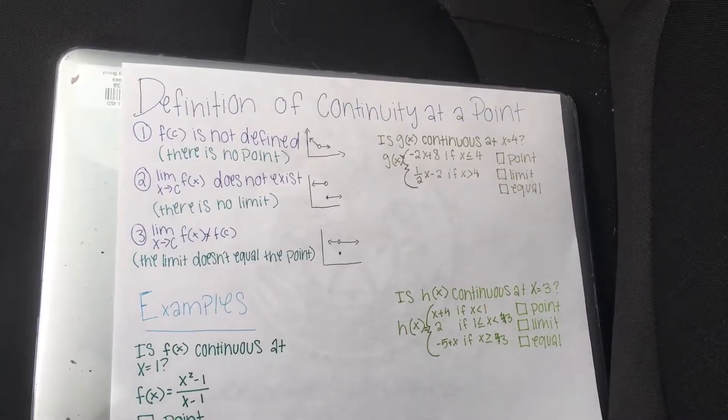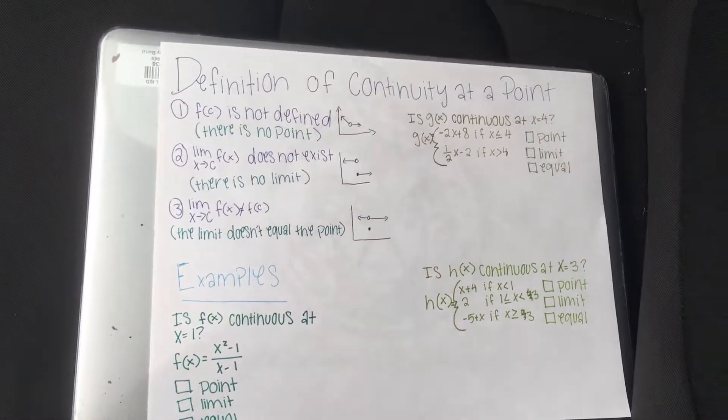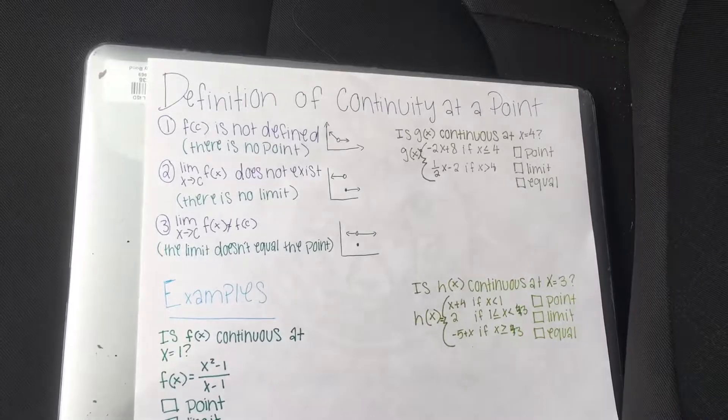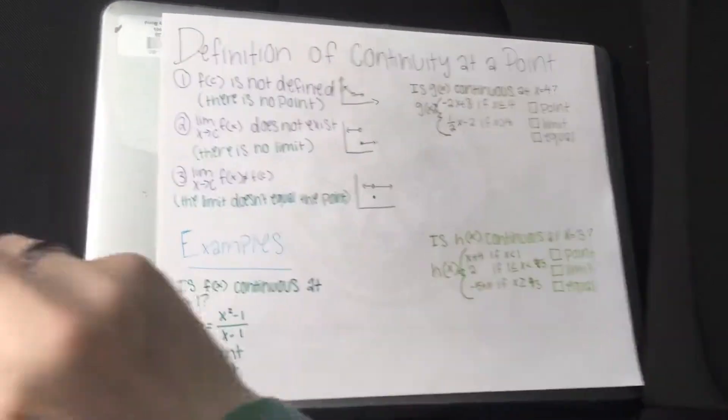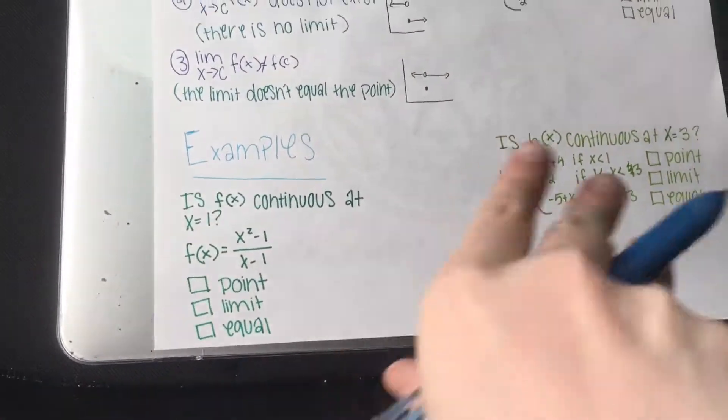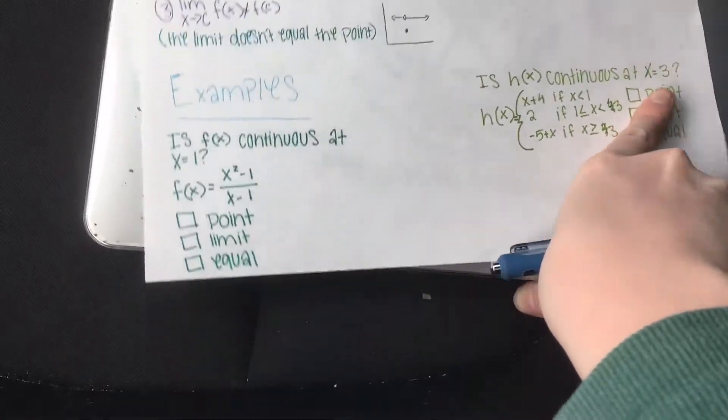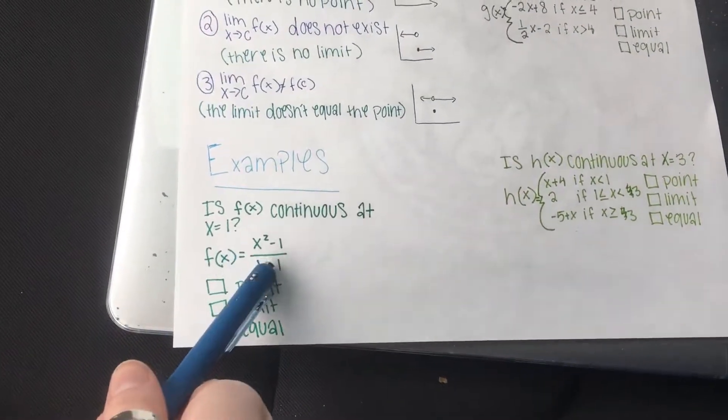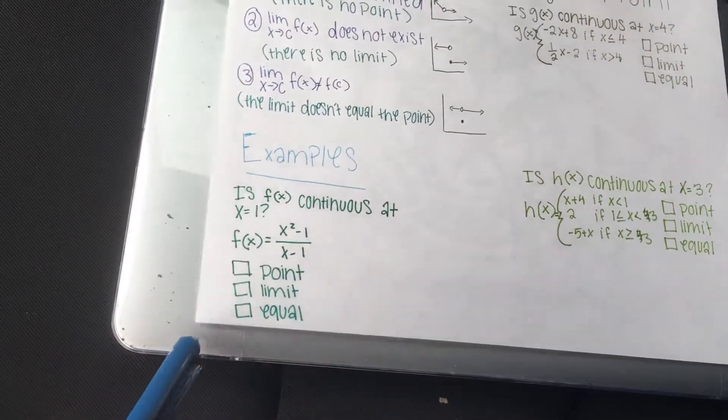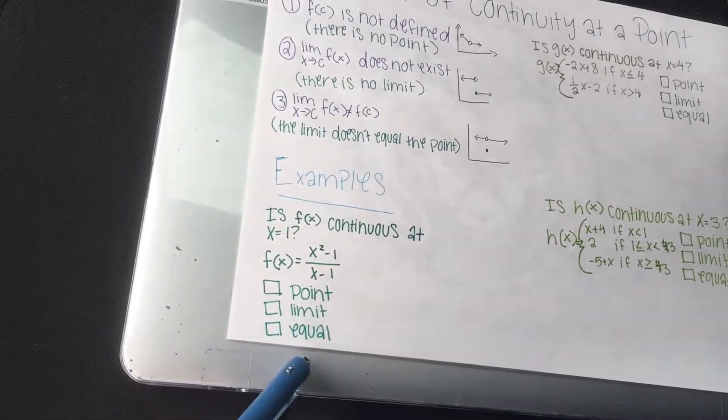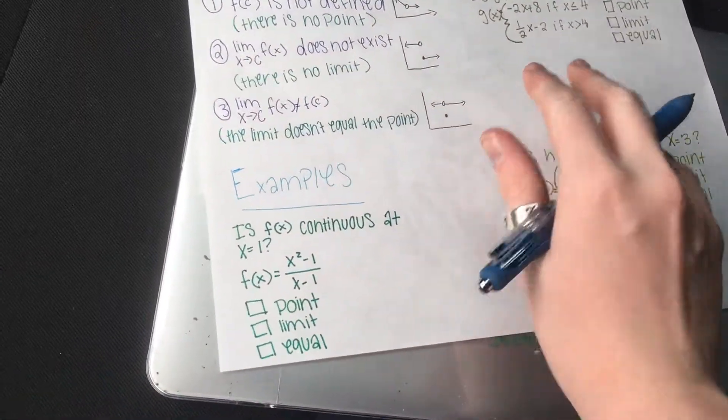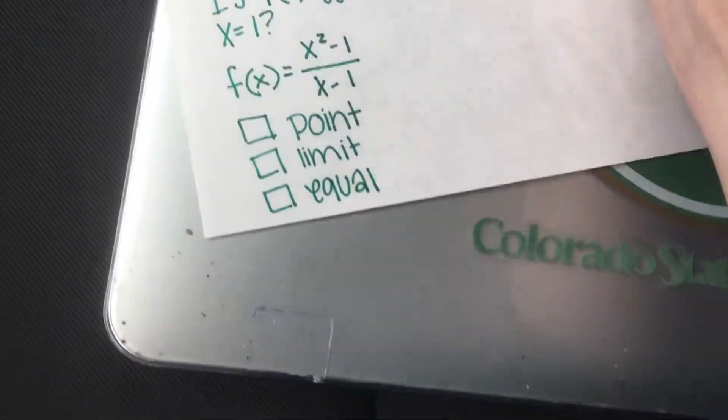So let's get started on our first example keeping these rules in mind. First, our example is: is f(x) continuous at x equals 1? So we're trying to figure out if there's a point, there's a limit, and if the point and the limit are equal to each other.